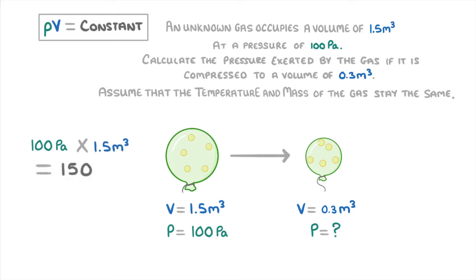Then, looking at our other gas sample, we know that its pressure times its volume must also equal 150. So to find the pressure, we can just plug in the 0.3, and then rearrange by dividing both sides by 0.3, which gives us 500 Pa. So we know that this new container must be at a pressure of 500 Pa.